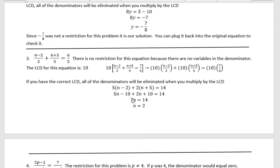So I have 5n plus 2n is 7n. The 10s cancel and I get 7n equals 14. Divide both sides by 7 and you get n equals 2. And again there was no restriction, so 2 is our solution. You can always plug that back in to check it.